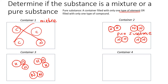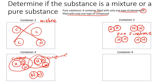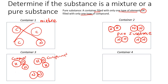In container number three, we have a compound — two or more different elements bonded together. There's also another compound. But this other particle is not a compound because both atoms are the same type. The definition says a pure substance must be only one type of element or only one type of compound. Here we have an element and a compound mixed together, so this is a mixture.